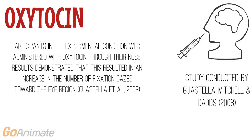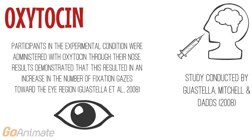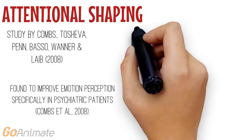Evidence has suggested that the deficit in emotion perception found in those with schizophrenia may be caused by a reduction in the time these individuals view facial features relevant to emotion perception, such as the eyes and the mouth. Therefore, interventions have targeted this. For example, the neuropeptide oxytocin, when administered through the nose, has been demonstrated to enhance one's fixation towards the eye region of others, and therefore improve one's ability to perceive emotion through visual means, specifically facial expression, as assessed on an emotion perception task.